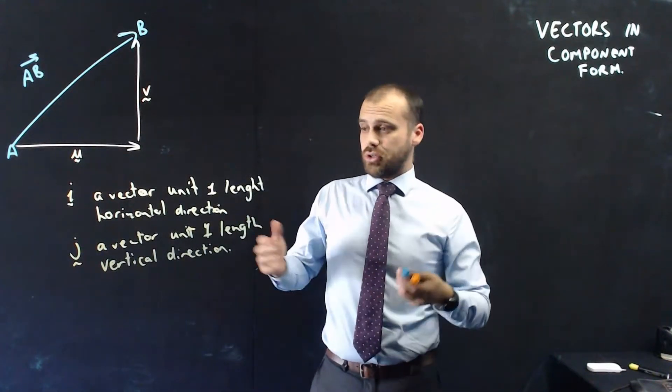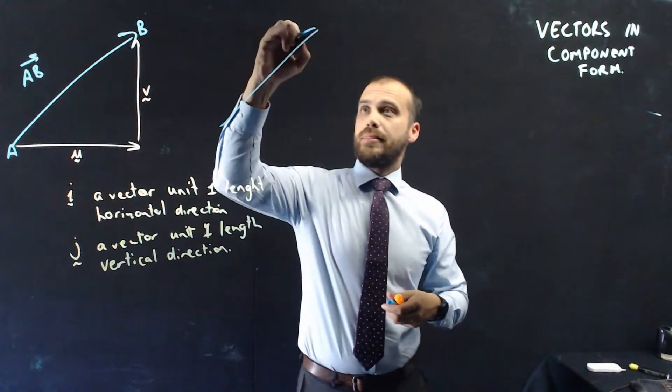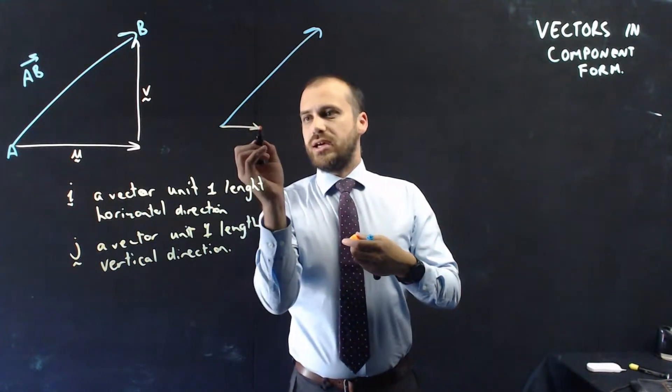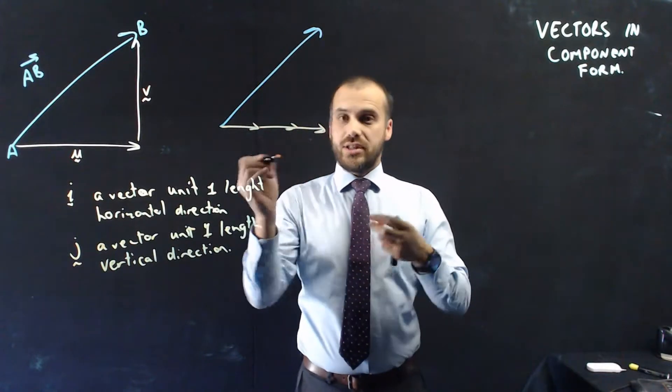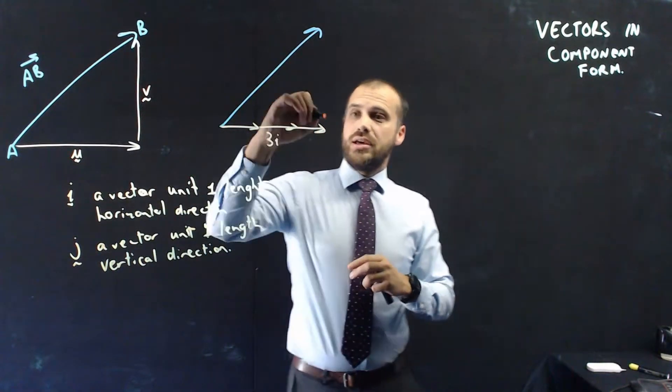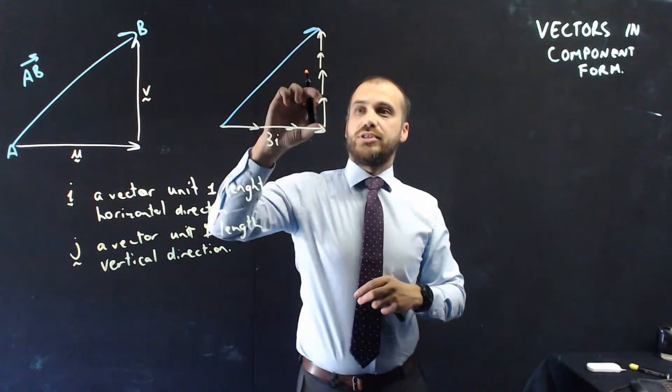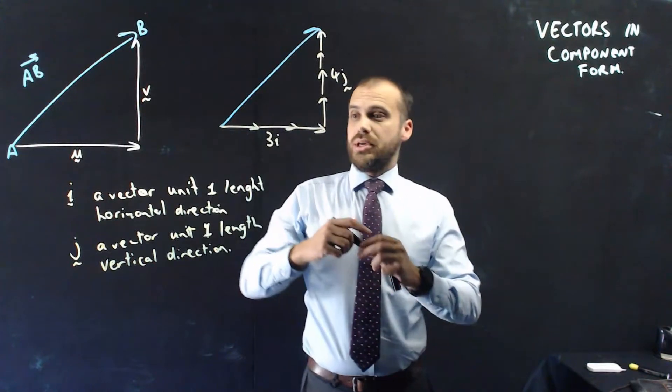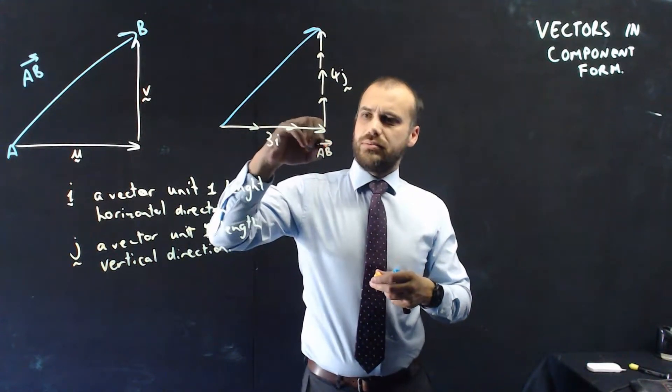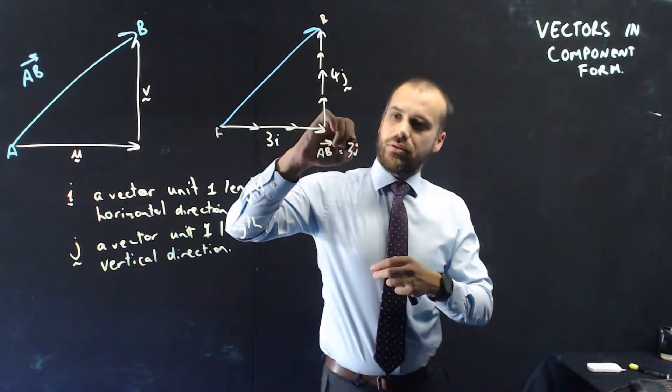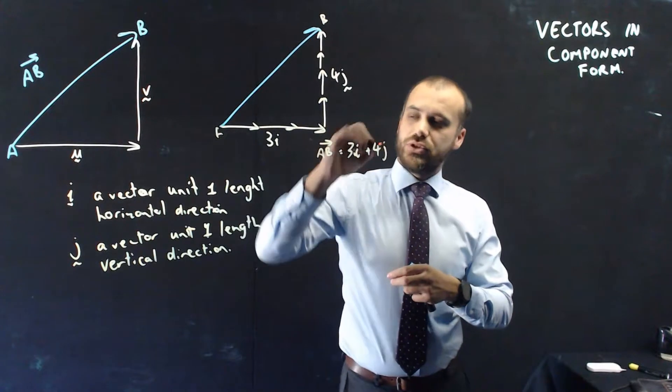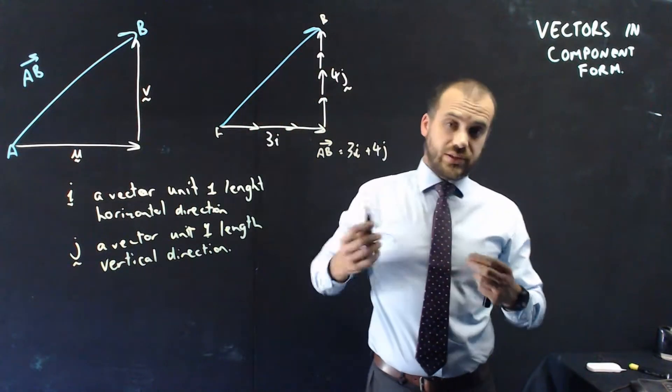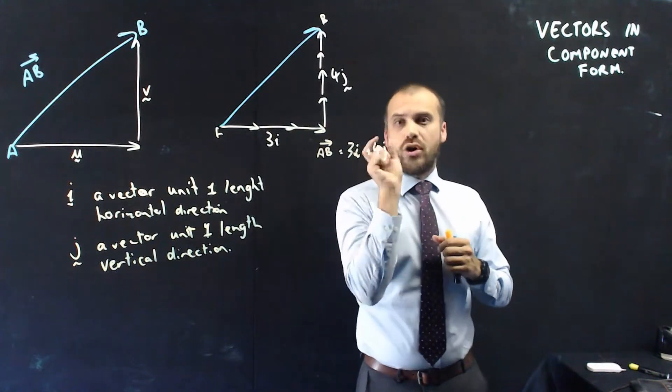Alright, so if I've got some vector, whatever it might be, let's just draw another one really quickly. I can count up how many unit 1 vectors there are. Let's say there's an I vector, and another I vector, and another I vector. So that means that that's three I vectors, and maybe there's 1, 2, 3, 4. Obviously, they're all the same length. Maybe there's four J vectors there. So now I can call vector AB, let's call this one AB, I can call it 3I plus 4J, because I'm adding that vector, which is 3I, plus that vector, 4J, to make that vector. So that's what the I and the J are, the vectors of a length, length 1.